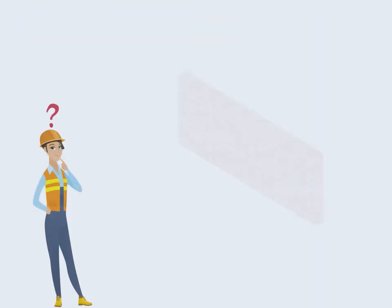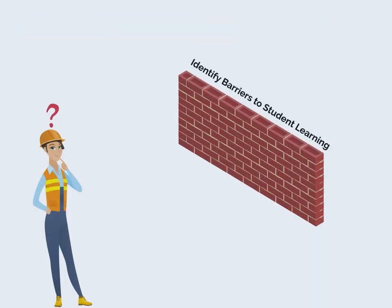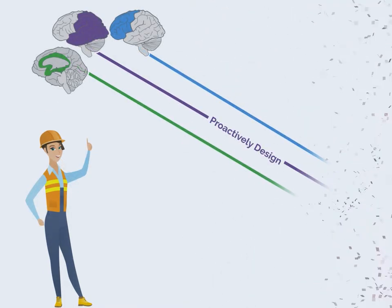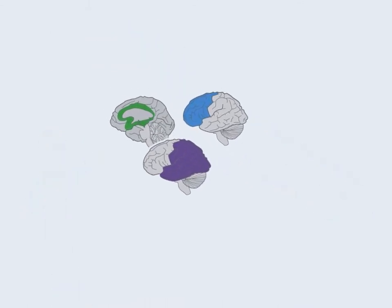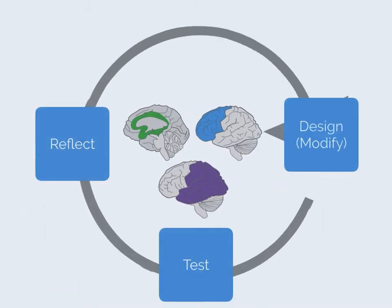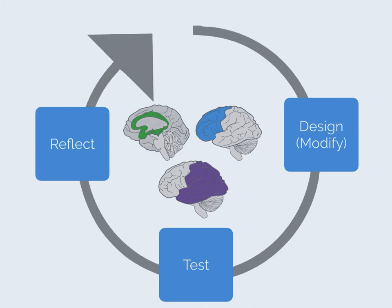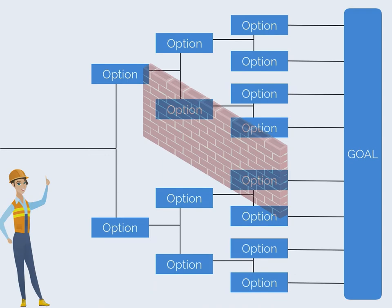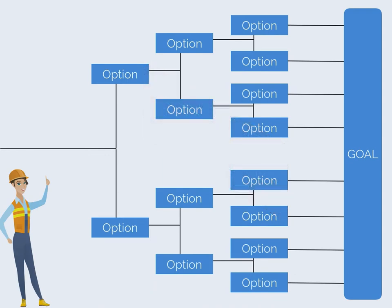UDL compels us to think like engineers, identifying problems and developing solutions. The iterative design process of designing, testing, and modification allows us to constantly refine the learning opportunity. By engineering the learning environment with flexible methods and materials, barriers are neutralized, giving learners the option to choose the pathways that best suit their strengths, needs, and interests.